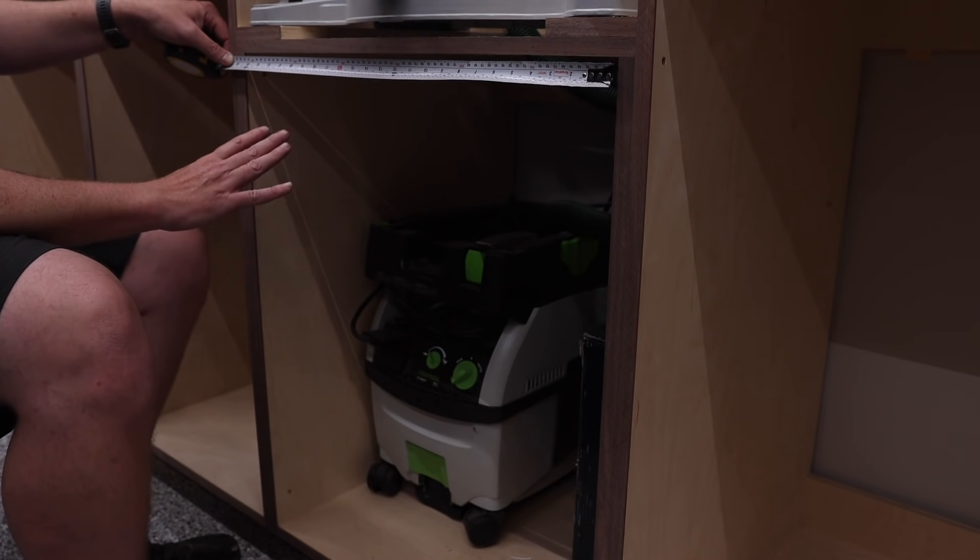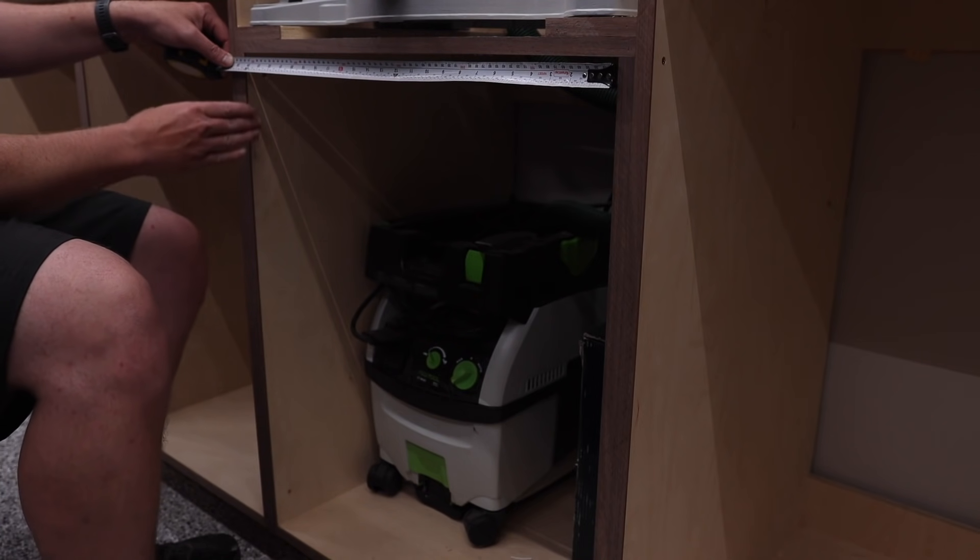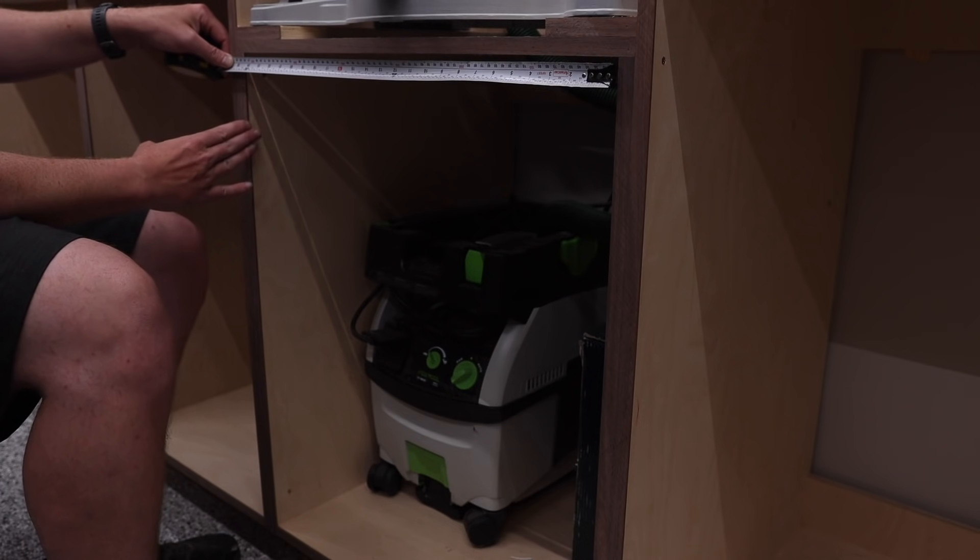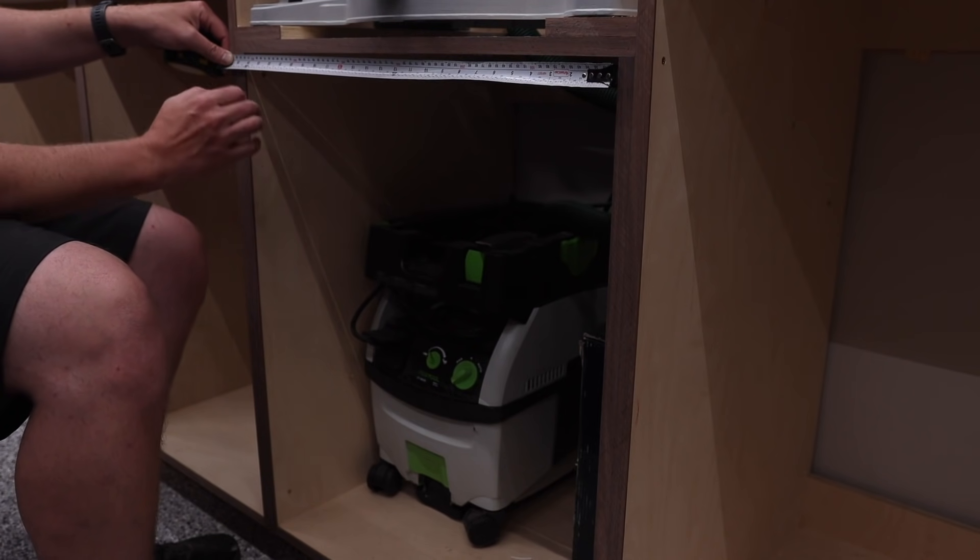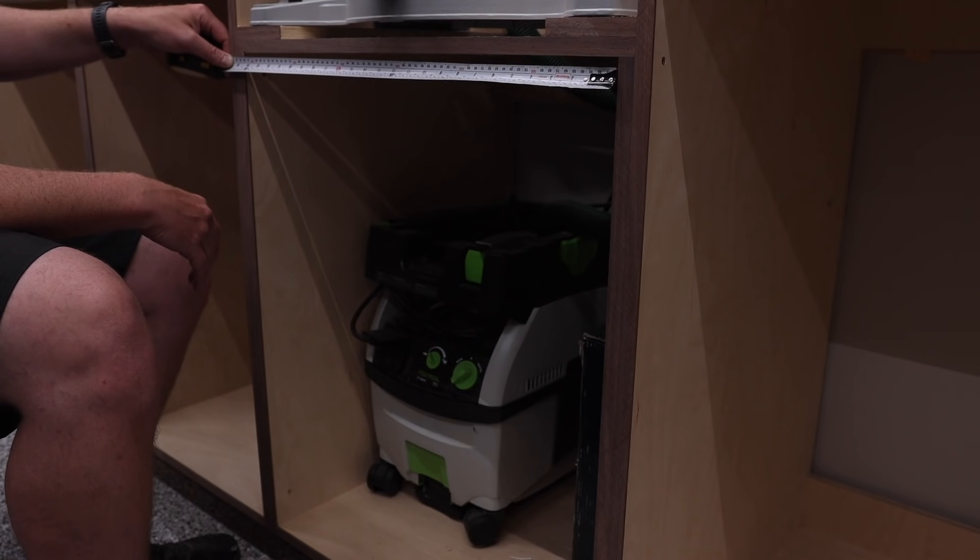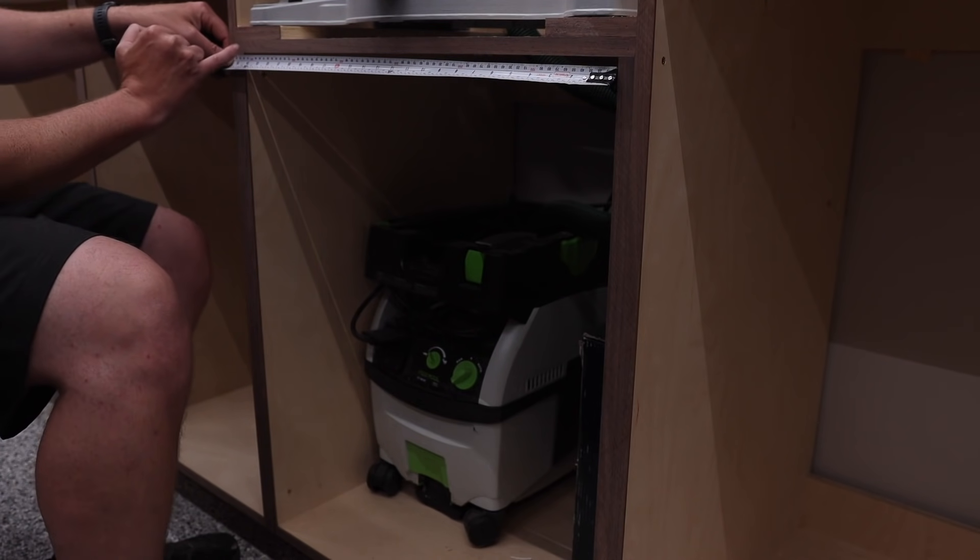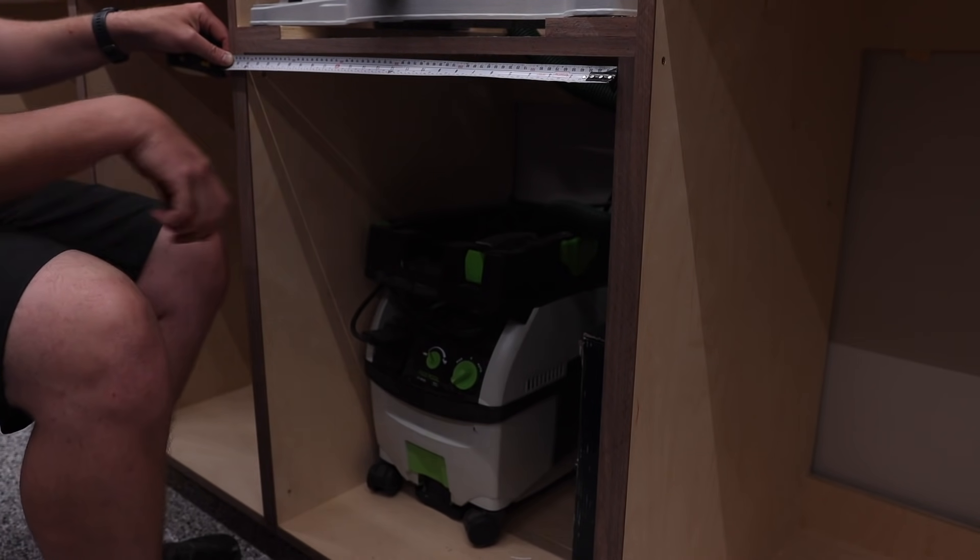So do whichever one you want. I find especially when working with hardware like slides and hinges and everything else, it is much easier to do it in metric simply because pretty much everything is made under metric measurements. Once I have that measurement, I want to start thinking and taking into consideration the gaps that I want, the different reveals that I want. I like a two millimeter reveal, which is just under an eighth of an inch.